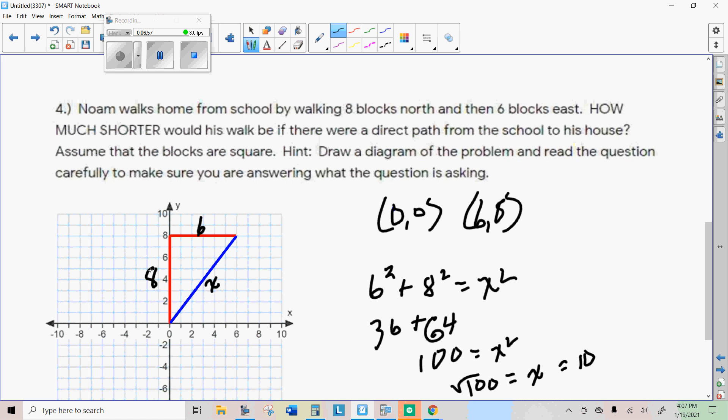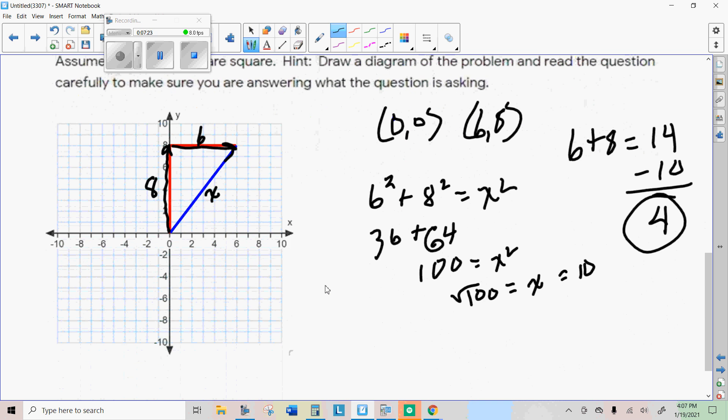Now, how much shorter is it? Well, if he would have went straight, that would be eight that way plus six that way equals 14. If he would have took the shortcut, it would only be 10 blocks. So I'm just going to subtract those and it would be four blocks shorter. So in each of the next problems, use the coordinate grid to help you find the solutions.